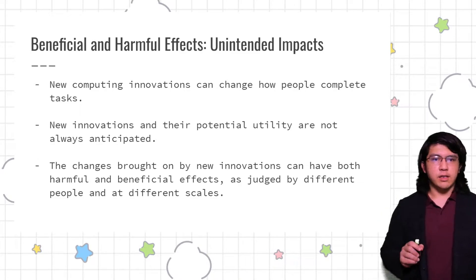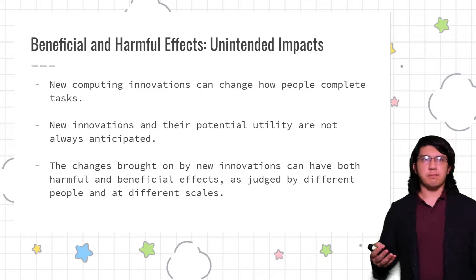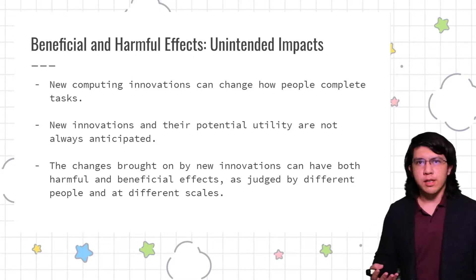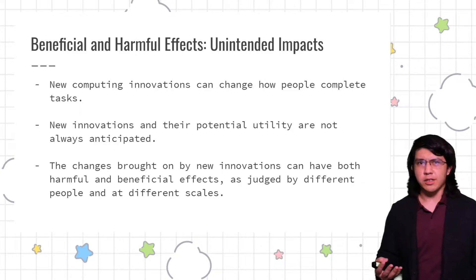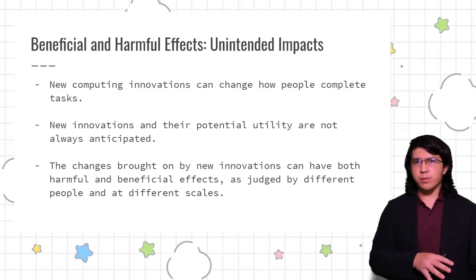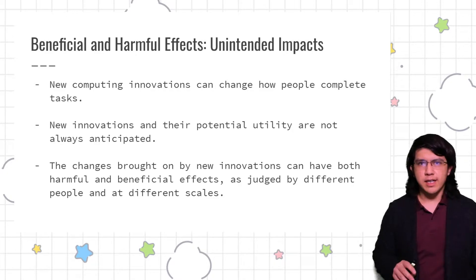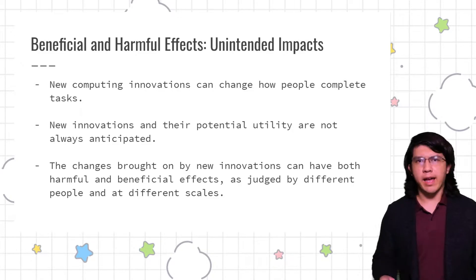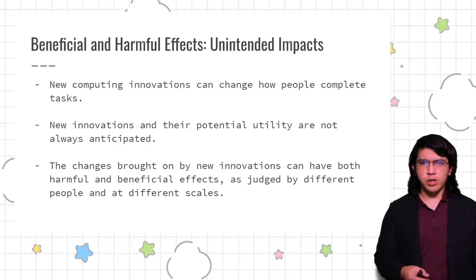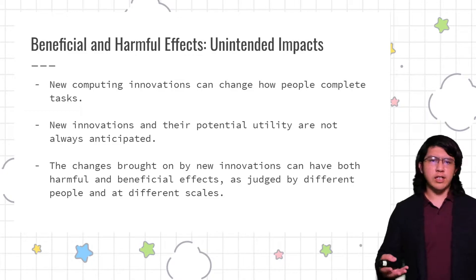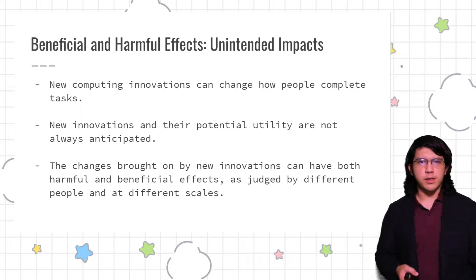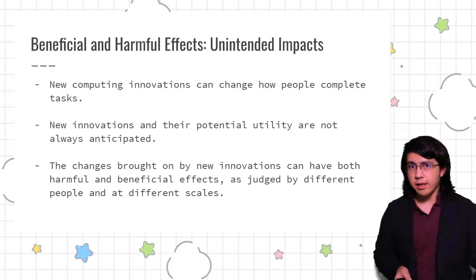One of the tricky things about discussing beneficial and harmful effects is that there's going to be a lot of necessary vagueness to it, especially when discussing things like ethical issues where there might not be clear right answers. So let's set a few anchor points — a few baselines that we can confidently say — and then explore some of the topics you might have to consider. One of the more concrete things is that computer innovations will change how people complete tasks; it's changing how you're studying, for example.